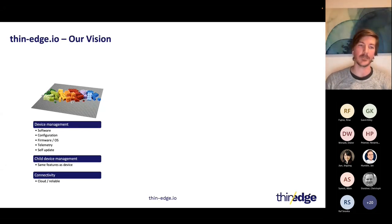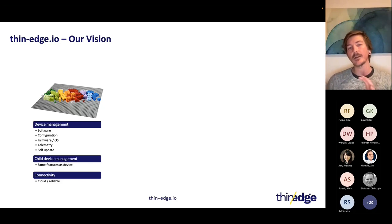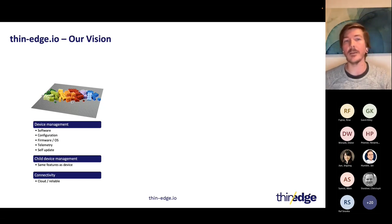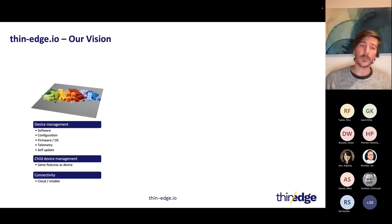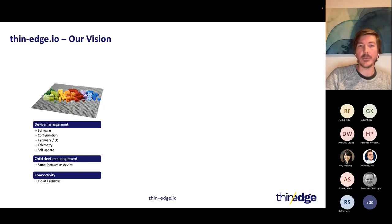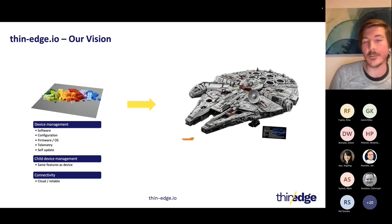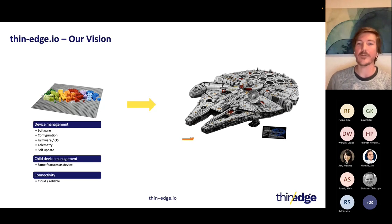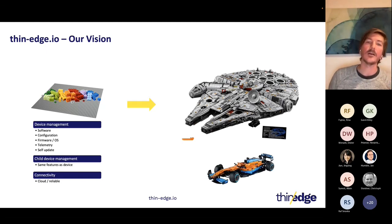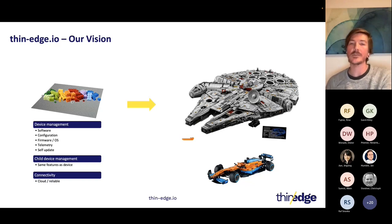From the device management aspect, we're looking at software configuration, firmware, telemetry, and also connectivity, looking at the cloud and reliable communication in potentially unreliable networks like mobile networks. We want to provide easy to use blocks that you can either choose or not use. You can build great products - if you want to build a Millennium Falcon, by all means you can. But we can't have the building blocks too large because that won't fit everyone's use case. We try to look at the commonalities we can provide to different community members to reuse in their use cases.